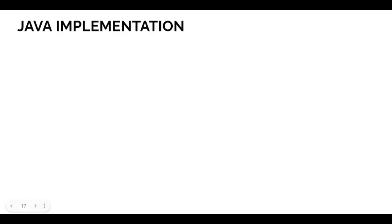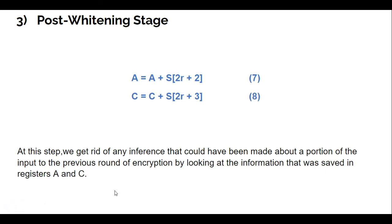For the last step is post-whitening stage, which is A equals A plus S(2R plus 2), C equals C plus S(2R plus 3). For step 7 and 8, here at this step we get rid of any inference that could have been made about a portion of the input to the previous round of encryption by looking at the information that was saved in the registers A and C. I think that's all from me. I will pass to the next presenter for the next part. Thank you.